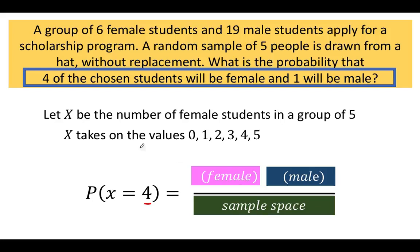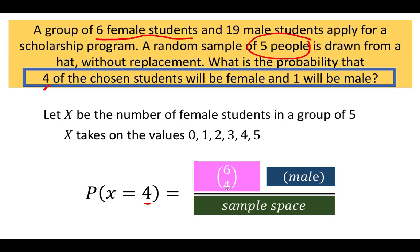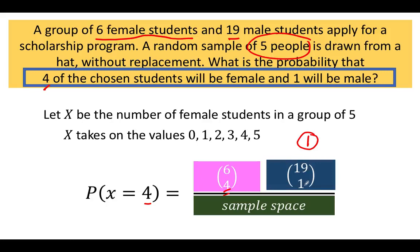We want to select four female students from the six female students in the population, so this is the combination of six items taken four at a time. Since we want a sample of five people and we already selected four female students, we need one more male student selected from the 19 male students — that is 19 combined one at a time. So we get four females and one male, a total of five people sampled.